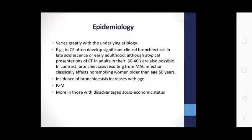The epidemiology of bronchiectasis varies greatly with the underlying pathology. In cystic fibrosis, patients often develop significant systemic bronchiectasis in late adolescence and early adulthood, although typical presentation of CF in adults in their 30s to 40s is also possible. In contrast, bronchiectasis resulting from MAC infections classically affects non-smoking women older than 50 years. Incidence increases with age, female sex, and disadvantaged socioeconomic status.